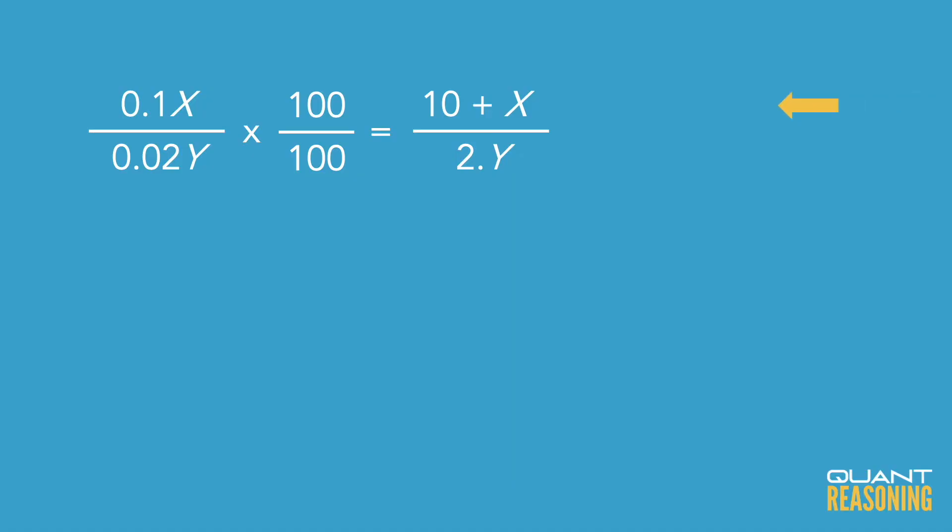So our numerator is something in the teens, between 11 and 19, and the denominator is between 2.1 and 2.9. The question is asking about the closest integer to the greatest possible value of that ratio. To maximize the value of a ratio, we make the numerator as large as possible and the denominator as small as possible.